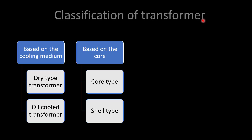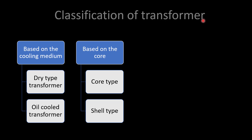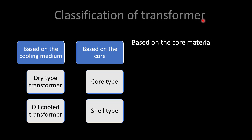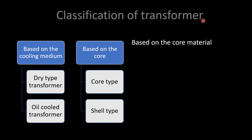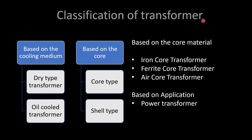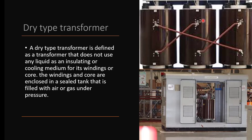We can classify transformers in different ways. Based on the cooling medium, transformers are commonly classified into two: dry type transformer and oil-cooled transformer. Based on core construction, we can classify into core type and shell type. Based on the core material used, we can classify as iron core transformer, ferrite core transformer, and air core transformer. Based on application, we have power transformers, distribution transformers, and instrument transformers.